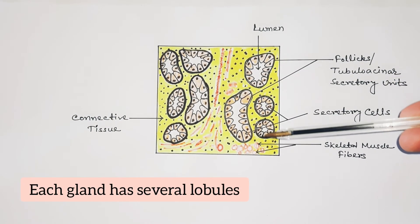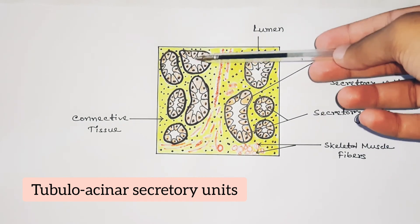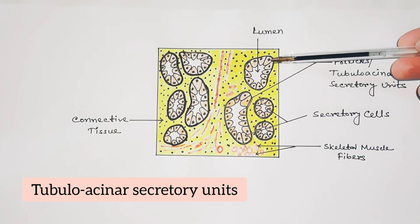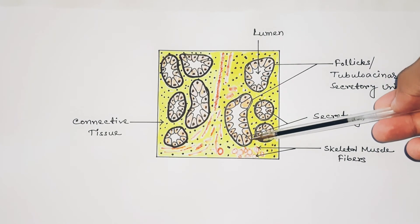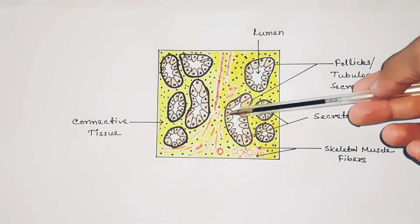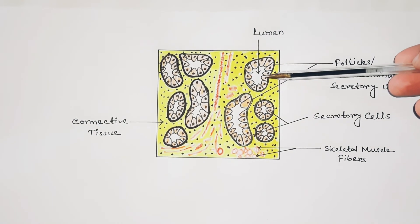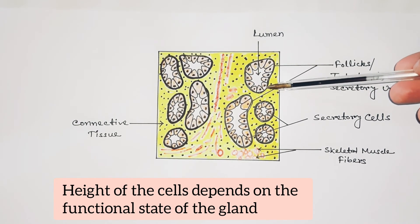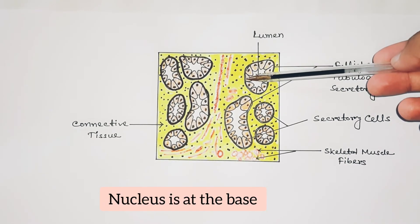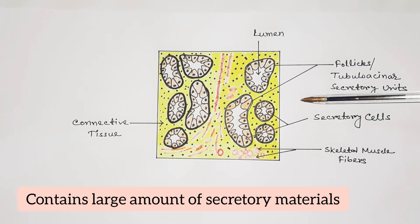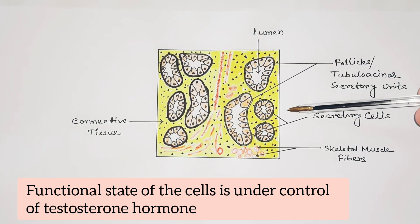This is the histological structure of bulbo-urethral glands. Each gland has several lobules. The lobules have tubuloalveolar secretory units, which are surrounded by a smooth muscle layer. The epithelium of the secretory units consists of mucous-secreting cells. The cells are columnar in shape and vary considerably in height depending on the functional state of the gland. The nucleus is at the base, and each cell contains a large amount of secretory materials. The functional state of the cells is under the control of testosterone hormone.